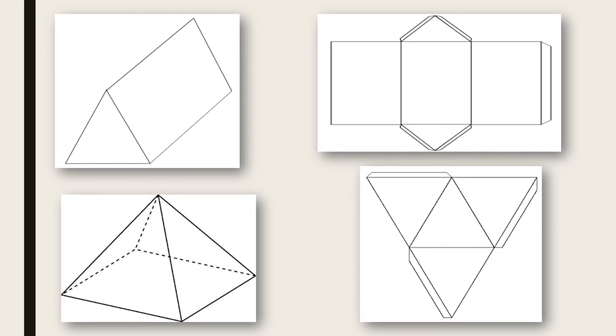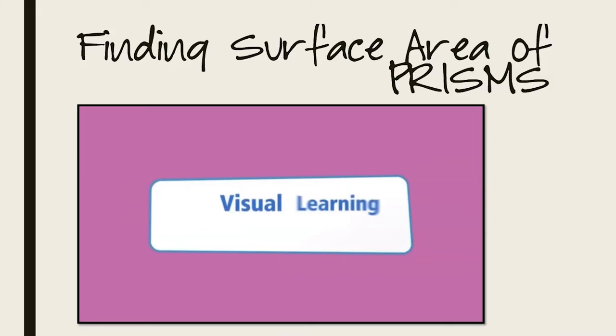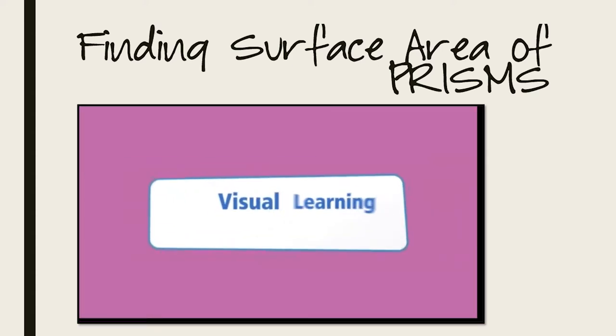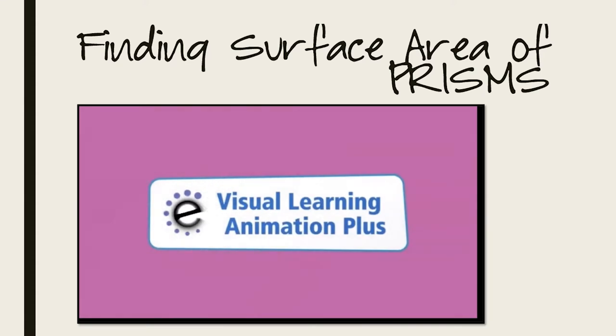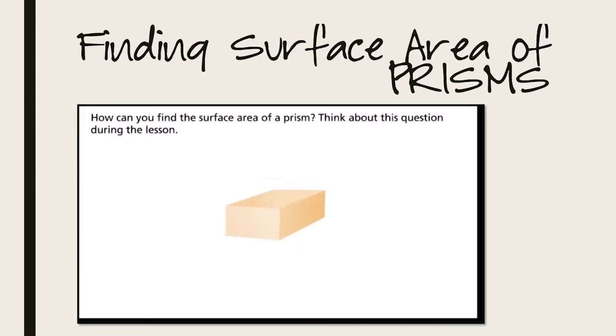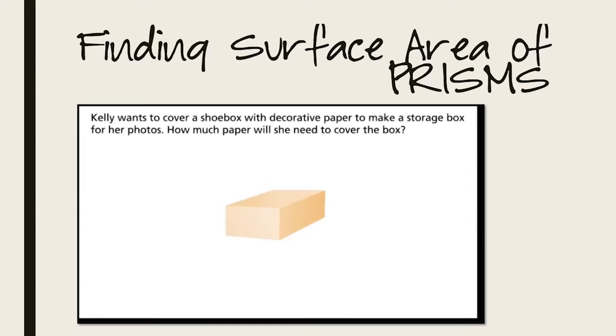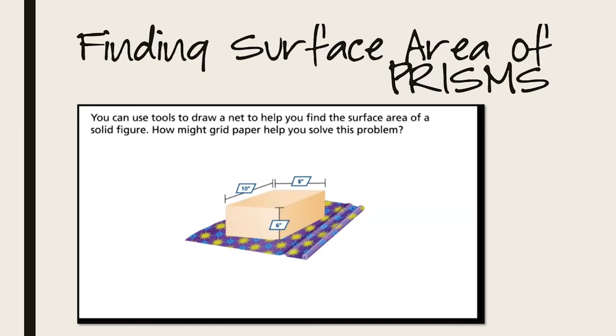Now let's see what Pearson has to say about using nets to help us find the surface area of prisms and pyramids. How can you find the surface area of a prism? Think about this question during the lesson. Kelly wants to cover a shoe box with decorative paper to make a storage box for her photos. How much paper will she need to cover the box? You can use tools to draw a net to help you find the surface area of a solid figure. How might grid paper help you solve this problem?